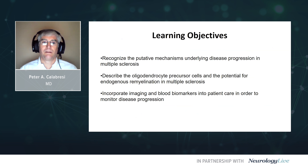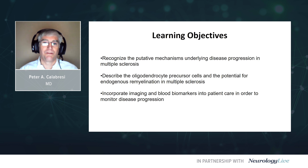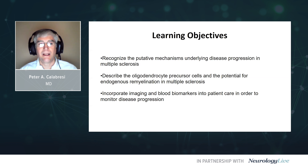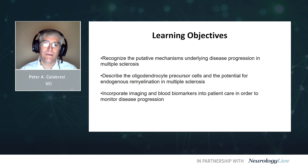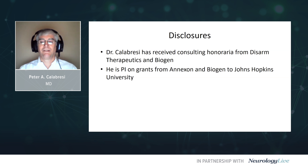These are my learning objectives. I would like to review putative mechanisms underlying disease progression in MS. I hope that we will come away with some knowledge about the oligodendrocyte precursor cells and the potential for endogenous remyelination in MS. And then finally, I will touch upon how we can incorporate imaging and promising blood biomarkers into patient care in order to monitor disease progression. These are my disclosures.